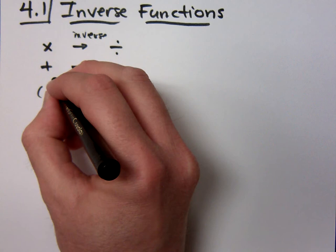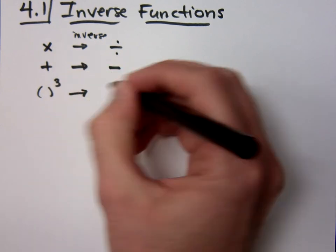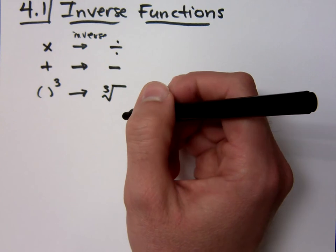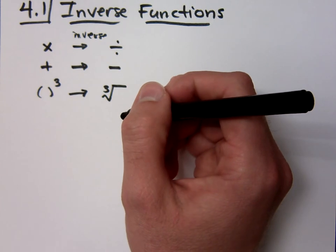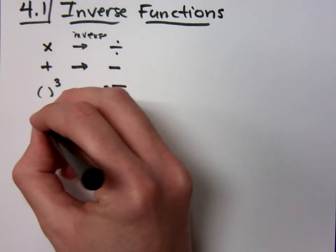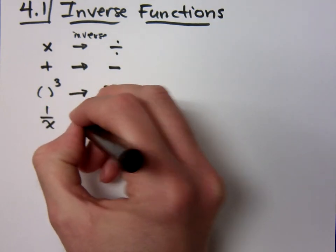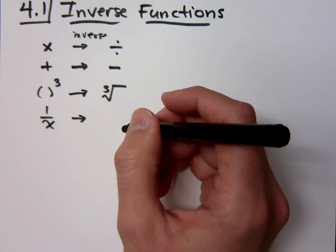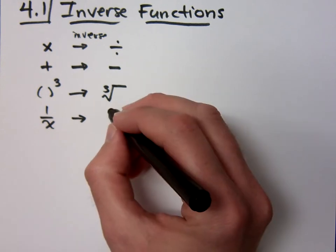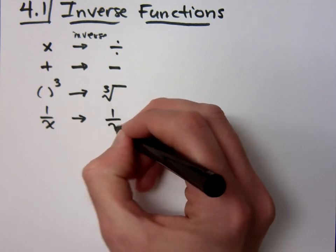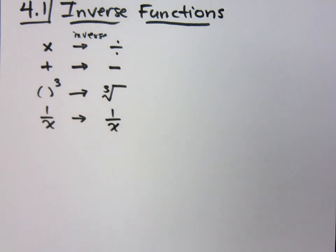The inverse of cubing? Doing the cube root. What is the inverse of the reciprocal? No. The inverse of doing the reciprocal. How do you undo a reciprocal? You do the reciprocal again. It's its own inverse.